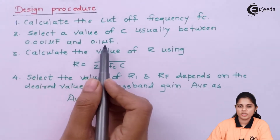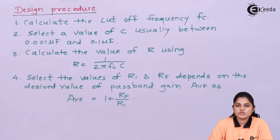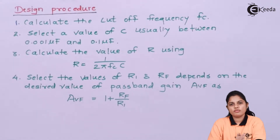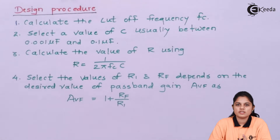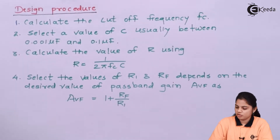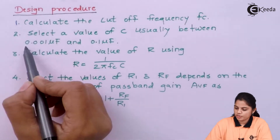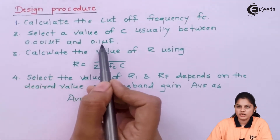The second step is to select the value of a capacitor, usually between 0.001 microfarad and 0.1 microfarad. These are the standard values used for filter designing. Whether it is a first-order or a second-order filter, the capacitor used in the network always has a value between 0.001 microfarad and 0.1 microfarad.